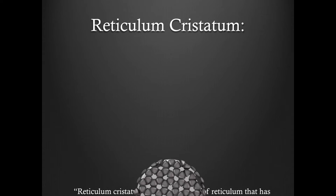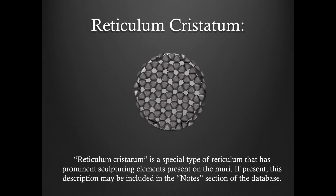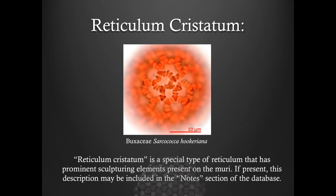Reticulum crustatum is a special type of reticulum that has prominent sculpturing elements present on the muri. If present, this description may be included in the notes section of the database. Here is an example.